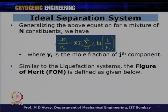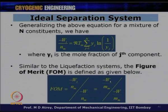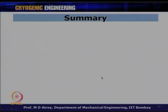Similar to the liquefaction system, the figure of merit (FOM) is defined as ideal work divided by actual work: FOM = (W_I/N_M) / (W_actual/N_M). The actual work of separation is always much higher than the ideal work, so the figure of merit is always less than 1.